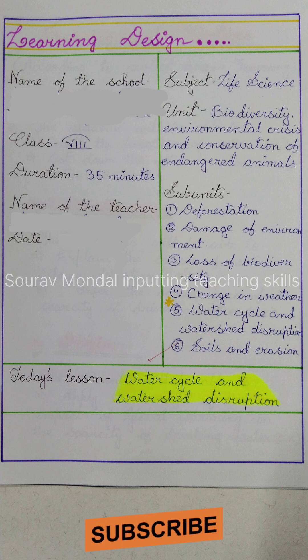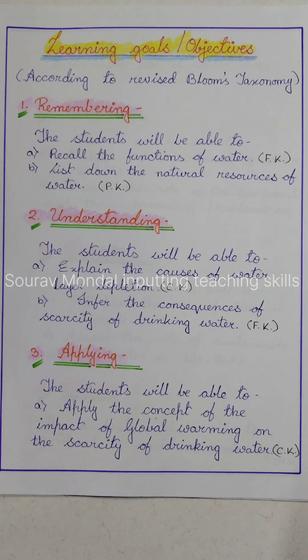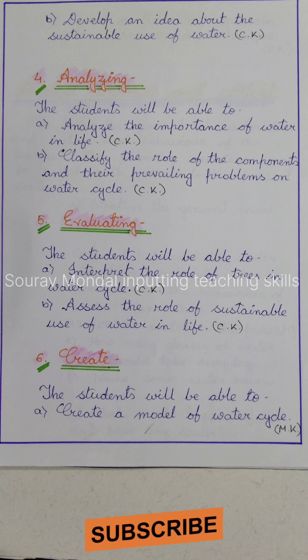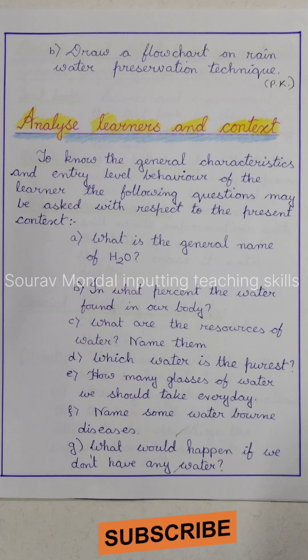As per the steps of learning design, I mentioned the learning goals and objectives according to Revised Bloom's Taxonomy — starting from the cognitive domain: remembering, understanding, applying, analyzing, evaluating, and creating. Next, as per the steps of learning design, the step is Analyze Learners and Context.